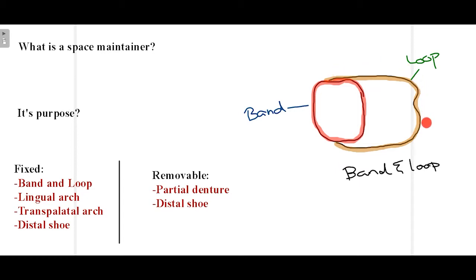Now why is a space maintainer required? Each tooth in the oral cavity is exfoliated from the mouth at a particular given time — not before, not later than that. If a primary molar is exfoliated before its expected time, a condition called mesial migration occurs where the tooth starts to tilt mesially. I'll show you how that occurs.